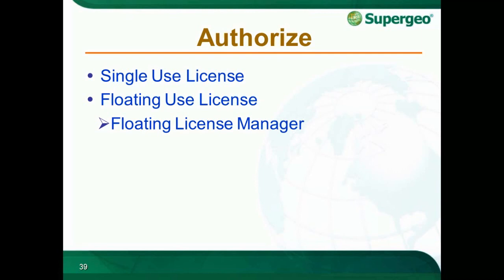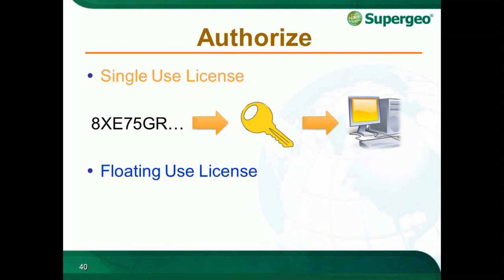For a 14-use license, you need to install the 14 license manager. For a single-use license, the serial number is valid for one machine — if you have 10 machines, you will need 10 licenses. After authorizing the license, the serial number is tied to the current machine and cannot be used to authorize another machine. Therefore, if you want to transfer SuperGIS Desktop to another machine, please contact us for help.